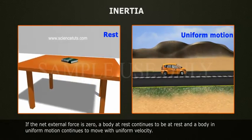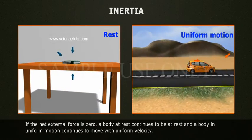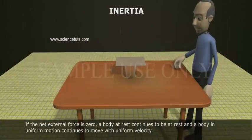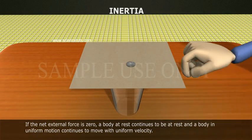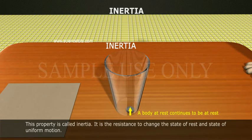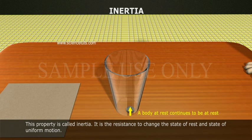Inertia: If the net external force is zero, a body at rest continues to be at rest and a body in uniform motion continues to move with uniform velocity. This property is called inertia. It is the resistance to change the state of rest and the state of uniform motion.